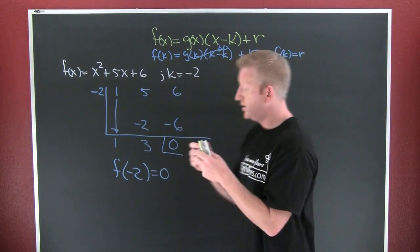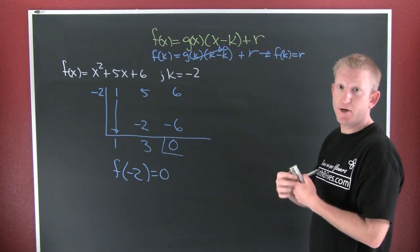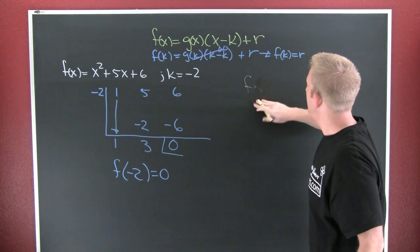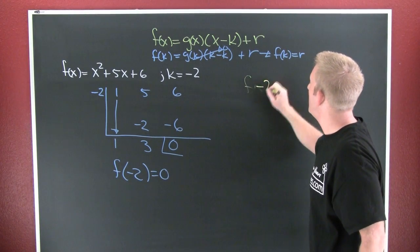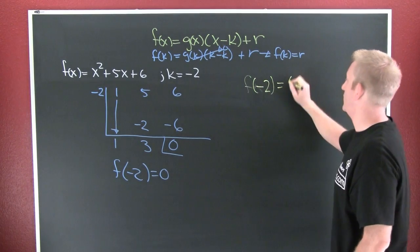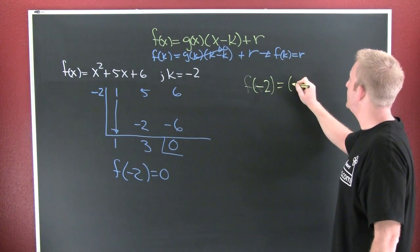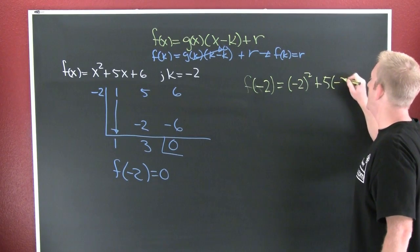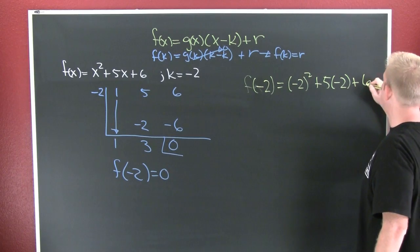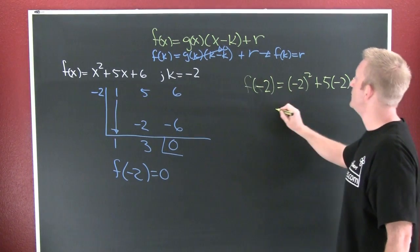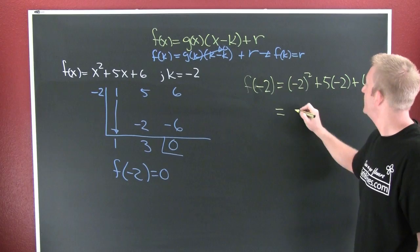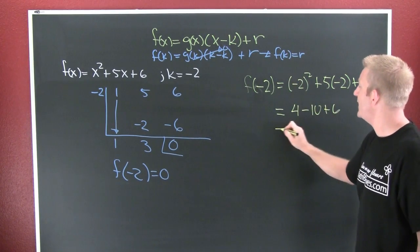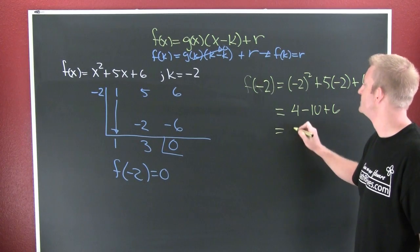Why don't we check it? Let's check it algebraically. What am I looking for? I'm looking for f of minus two. I urge you to use parentheses. Here we go: minus two squared plus five times minus two plus six. This is going to be four minus ten plus six, and if we evaluate this, that's going to be zero.